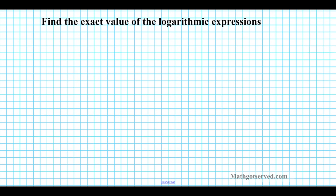For the last two problems, we're going to be finding the exact value of logarithmic expressions. We're going to be using the inverse property: log base a of a to the x equals x. Whenever the base of the logarithm matches the base of the exponential term, they cancel out and you're always left with the power. So the power is always the final result.